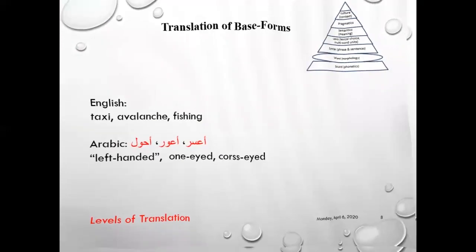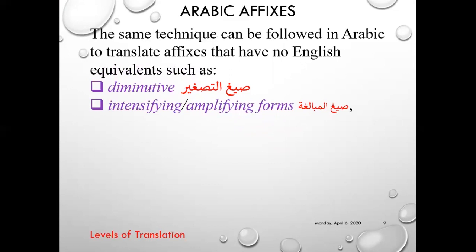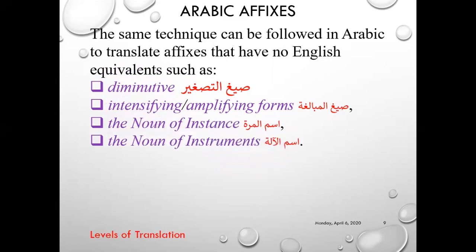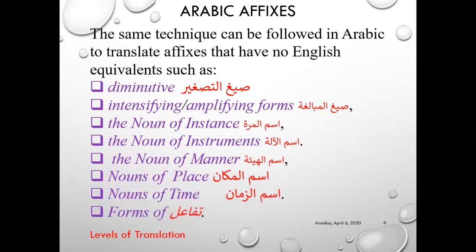When we move to Arabic affixes, the same technique can be followed in Arabic to translate affixes that have no English equivalent. For example, we have 'siyag al-tasghir,' diminutive cases; also intensifying or amplifying forms, 'siyag al-mubalagha'; the noun of instance, 'ismul marra'; the noun of instruments, 'ismul ala'; the noun of manner, 'ismul hay'a'; the noun of place, 'ismul makan'; the noun of time, 'ismul zaman'; and the forms of 'tafa'ul.' We'll explain what we mean by these forms and how to transfer their meaning.